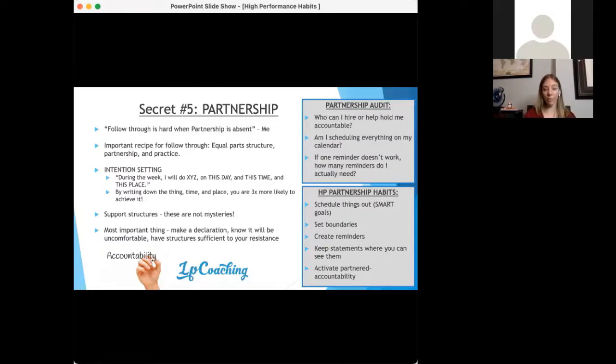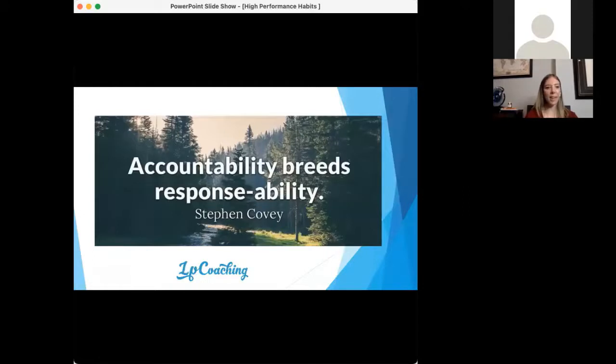Here are some partnership structures. The first is to schedule things out. The second is to set boundaries. They know to things. The third is to create reminders, as many reminders as you need. Keep statements where you can see them, reminders where you can see them. And activate partnered accountability. Take a look in your own life right now. What are some ways of holding yourself accountable currently? Is it your spouse? Is it your kids? Is it your calendar? Is it On Point? Is it your lists? Accountability breeds responsibility.